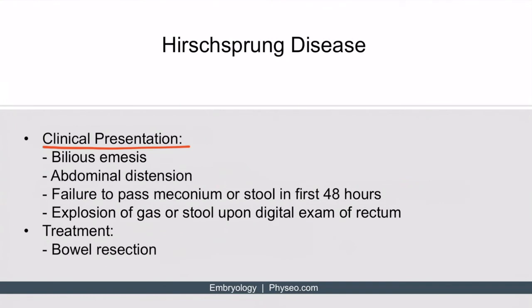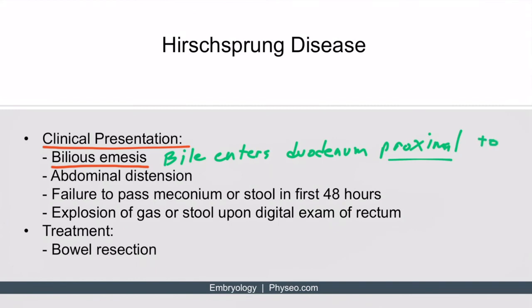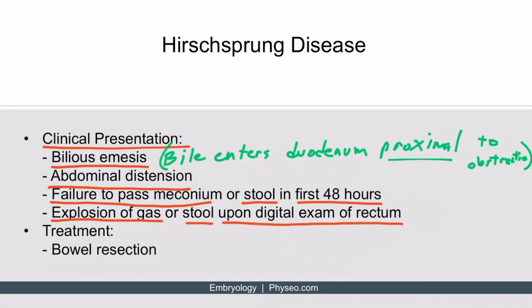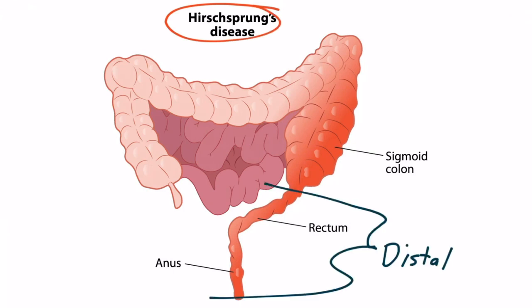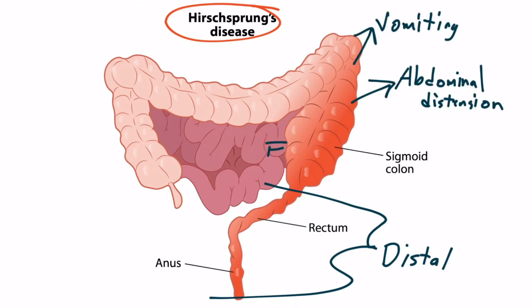The clinical presentation includes symptoms typical of distal colon obstruction, including bilious emesis — it's bilious because bile can enter from the bile duct to the duodenum proximal to the obstruction. These patients can also have abdominal distension, and experience failure to pass meconium or stool within the first 48 hours. Because of the buildup of pressure, there can be an explosion of gas or stool upon digital exam of the rectum, as you're manually relieving that pressure. Treatment is to perform a resection on the impacted portion of the bowel. The distal-most portion of the intestine is typically affected, and anything proximal to this gets that buildup, leading to abdominal distension, vomiting, and failure to pass meconium.